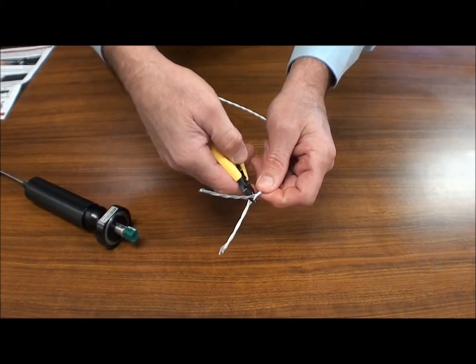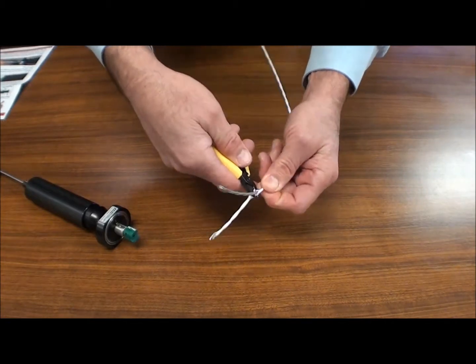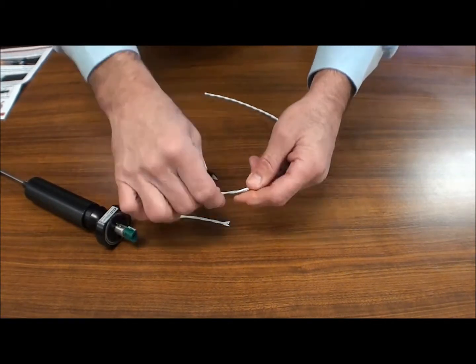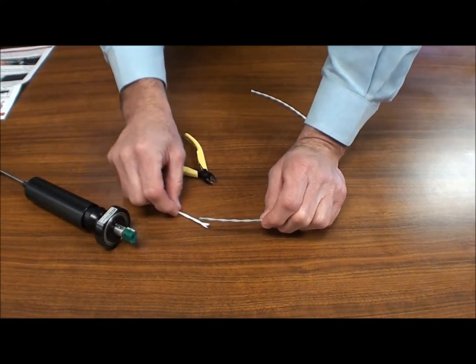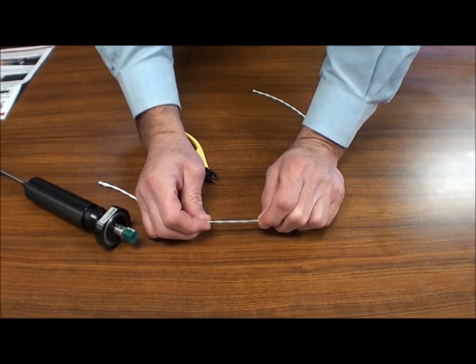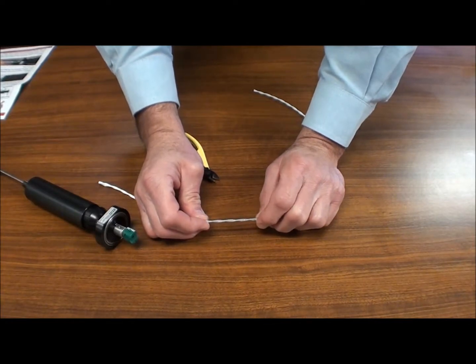Then you'll take your set of cutters and make a flush cut around the circumference of your jacket there, or around your insulation and around your conductor.